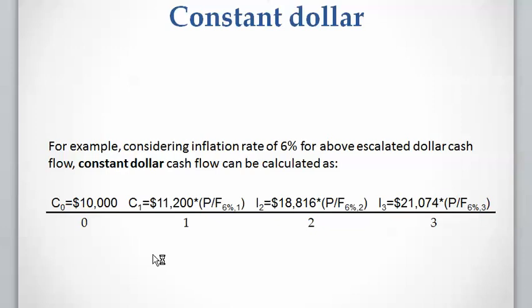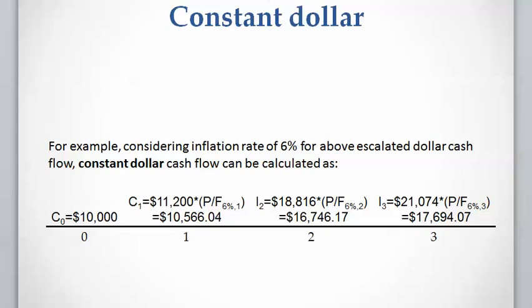The escalated payment at year one is eleven thousand two hundred dollars. To calculate the constant dollar for this payment, we discount it by one year at the six percent inflation rate, and so on for other payments — year three is discounted for three periods at six percent inflation rate. The result shows that the escalated dollar of eleven thousand two hundred dollars in year one equals a constant dollar of ten thousand five hundred sixty-six dollars, meaning it has the same purchasing power as that amount at the present time.